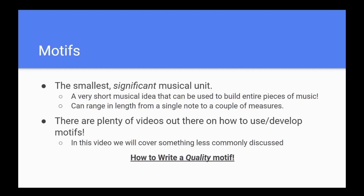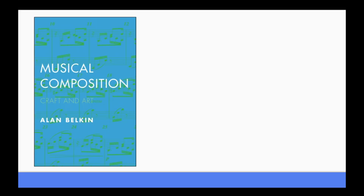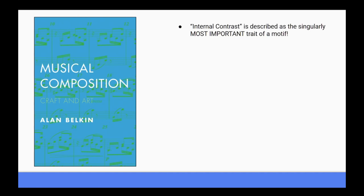If you've been following this channel for a little while, you might already be familiar with this book: Musical Composition, Art and Craft by Alan Belkin. I've lost track of how many times I've recommended this book already, but it really is a fantastic resource. In this book, Professor Belkin describes internal contrast as the singularly most important trait of a motif. In fact, he even goes as far to say that a motif requires internal contrast to be considered a motif at all.